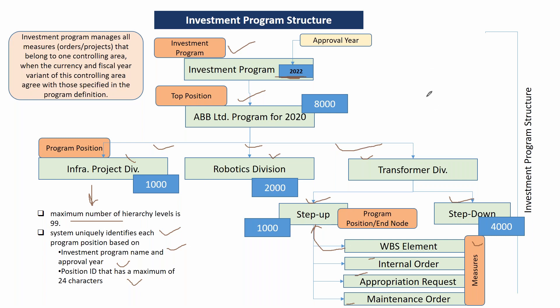One important thing: when creating the program structure, whatever measures you are going to assign must belong to the same controlling area. Investment program management manages all measures that belong to one controlling area. The currency and fiscal year variant of the controlling area must agree with those specified in the program definition — the currency and fiscal year variant should be the same in all the controlling areas.